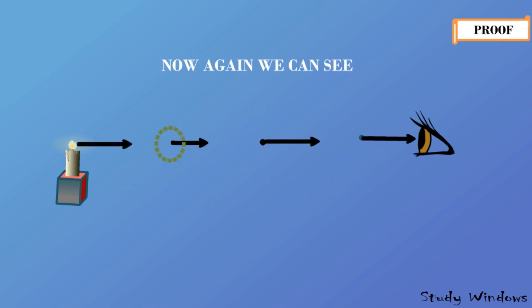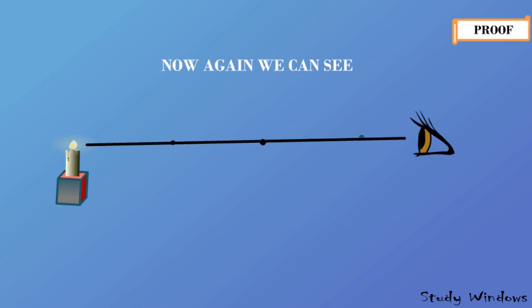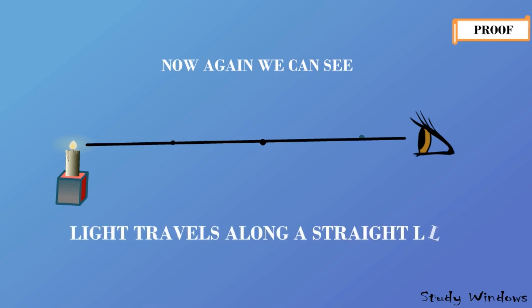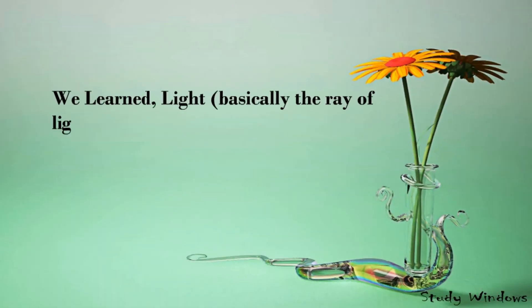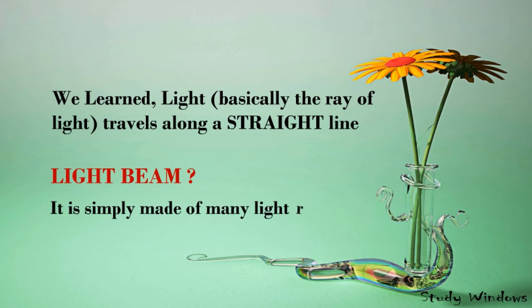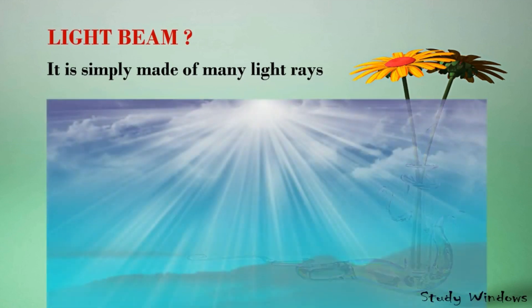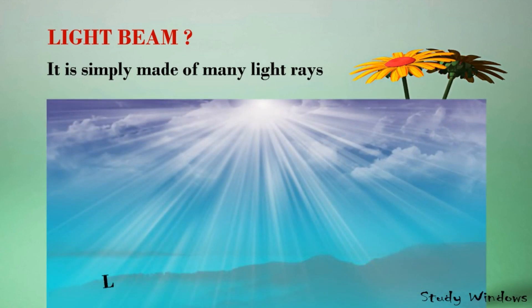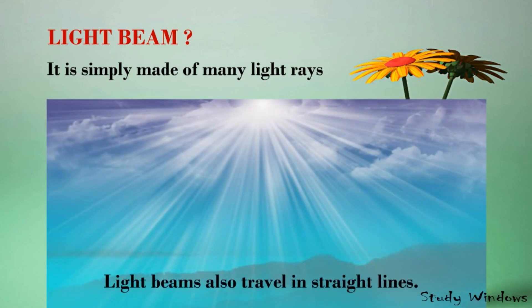If we draw an imaginary line from the candle to our eyes, it will be a straight line passing through all the holes. This confirms that light travels along a straight line. The ray of light travels in a straight line, and a light beam is simply made of many light rays. Just like individual rays, light beams also travel in straight lines.